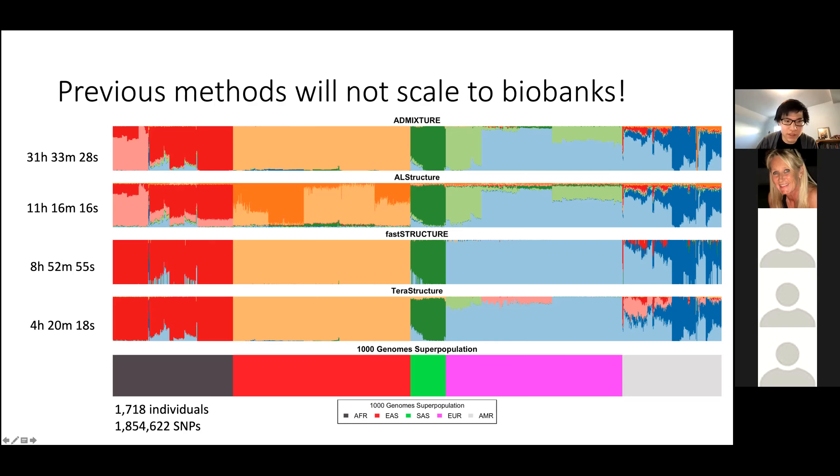The problem we're trying to tackle is that these methods do not really scale to large sample sizes. For a dataset of this size, admixture takes 31 hours to complete. AL structure takes 11 hours, fast structure takes 8 hours, and terra structure takes 4 hours. When we scale to the UK Biobank with hundreds of thousands of individuals, it can be very time consuming and prohibitive.